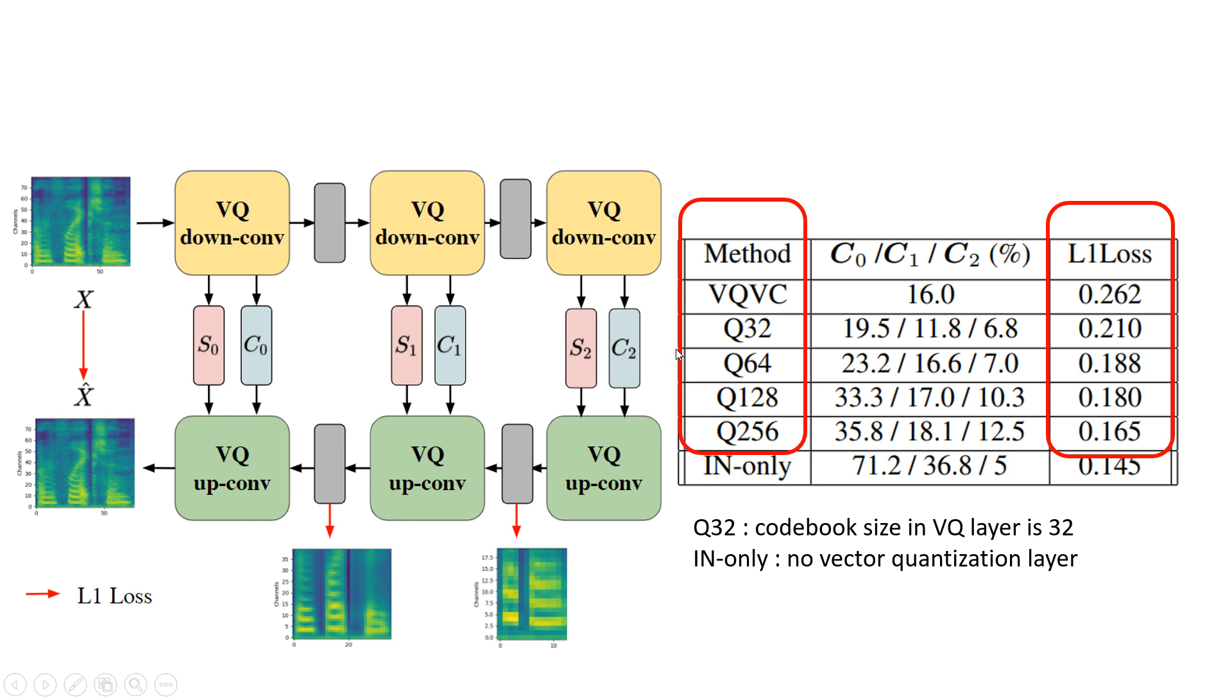I will first specify some notations. Q32 means the codebook size in the VQ layer is 32. None means there is no vector quantization layer. We find that if we enlarge the codebook size, the L1 norm, which is the reconstruction error, decreases. This means that if we use more codes, the model can reconstruct the new spectrogram better. However, if we use more codes, the disentangle performance also decreases. There is only 20 percent for Q32 in C0, the first skip connection layer, and about 35 percent speaker accuracy for Q256. We also find that if the model is deeper, then the speaker verification accuracy is also lower. The speaker verification accuracy of C0 for the none model is 70. This means this model cannot do voice conversion. The only thing it can do is reconstruction.